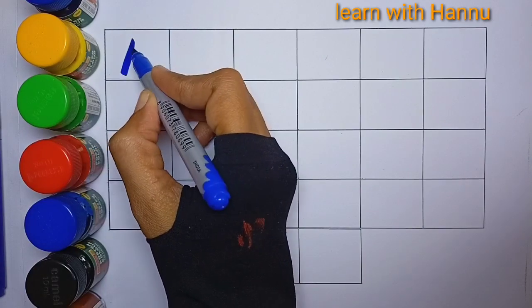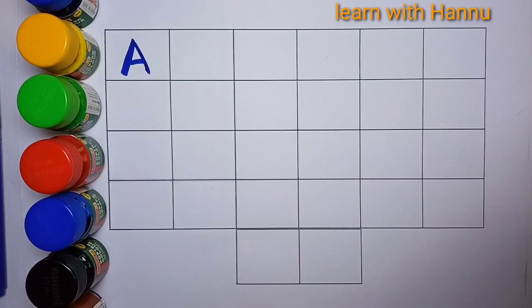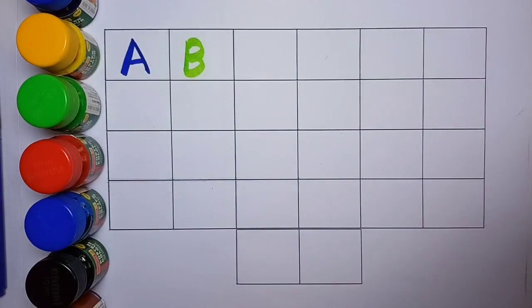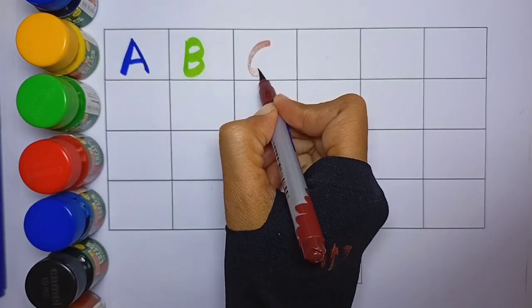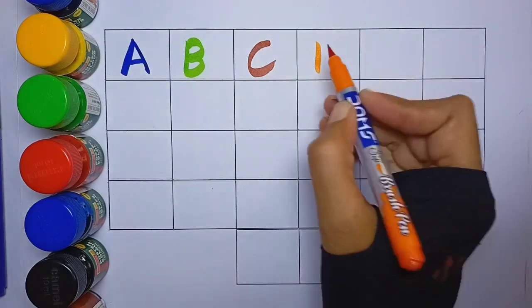A. A for apple, blue color. B for ball, green color. C for cat, brown color. D for dog, orange color.